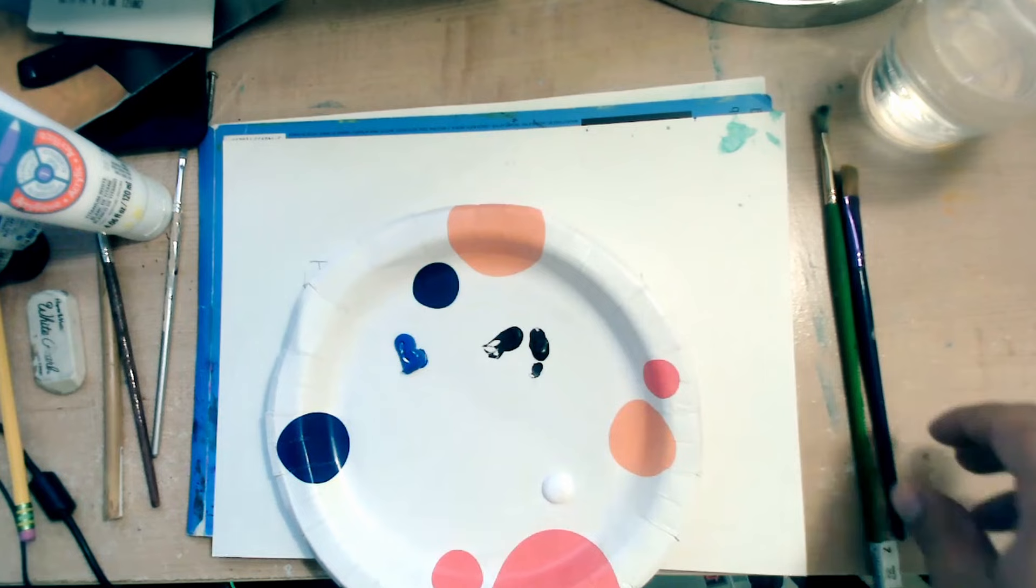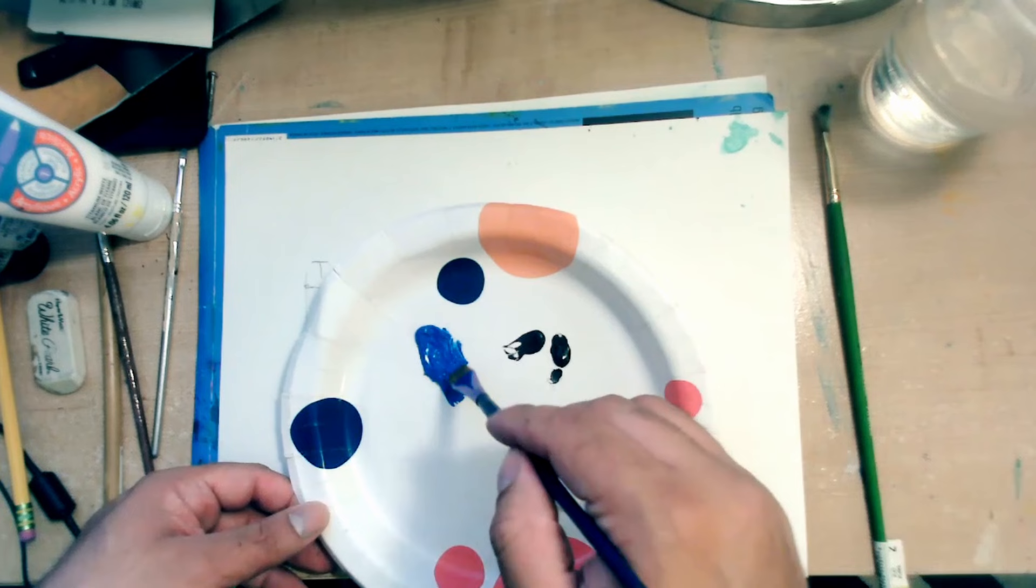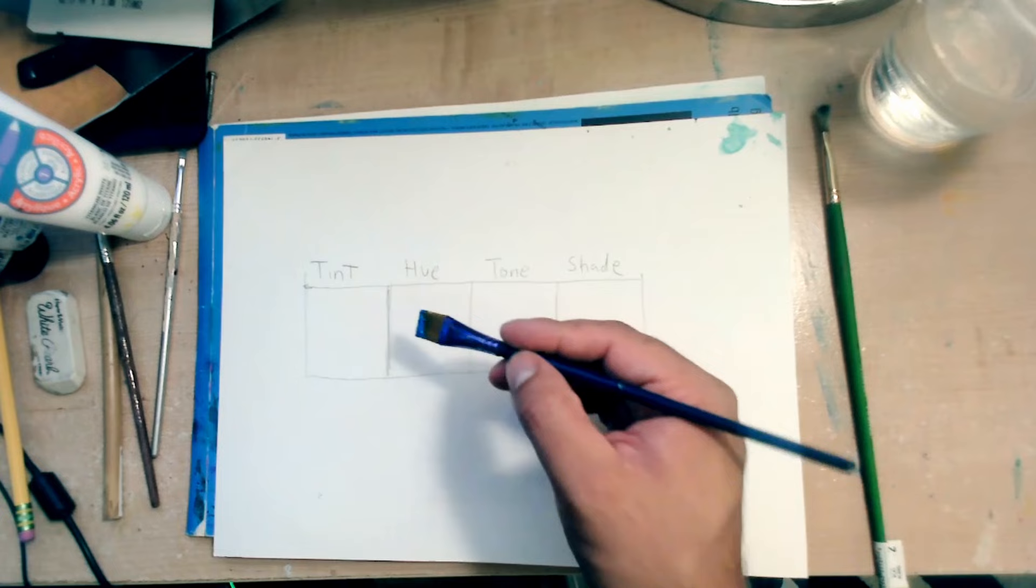And what is hue? Hue is basically a color by itself in its purest form. It's not mixed with anything. There's no white in it, no gray, no black. Nothing is just blue by itself.